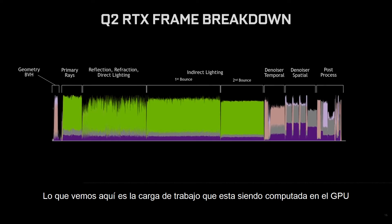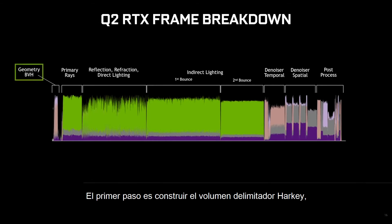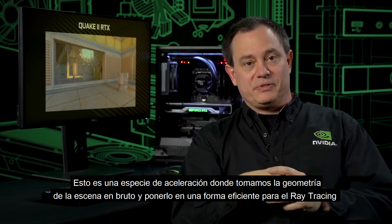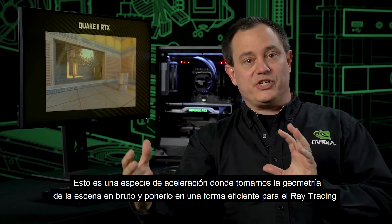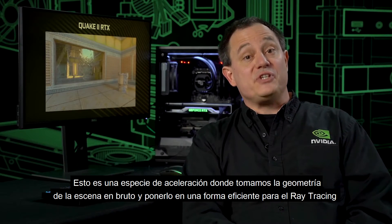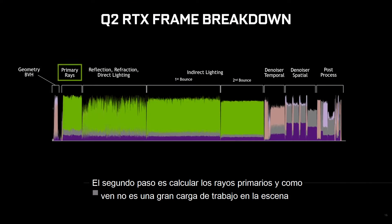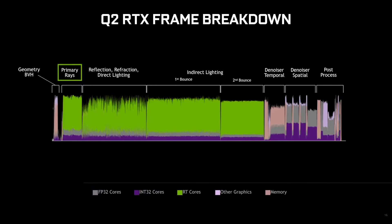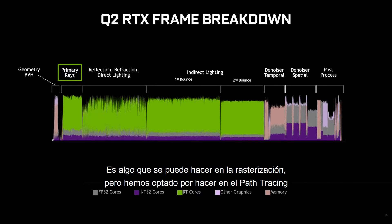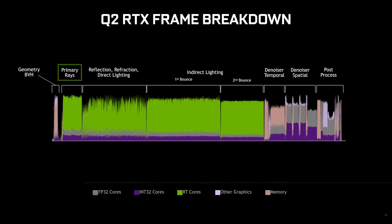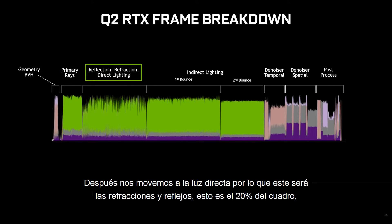What we have here is a deep dive into the actual workloads being computed on the GPU. The first step is constructing the bounding volume hierarchy — an acceleration structure where you take the raw geometry from the scene and put it into a form that's efficient for ray tracing. The second step is computing the primary rays, which is not a huge workload. After that, we move on to direct light: reflections, refraction, and direct lighting, which is about 20% of the frame.